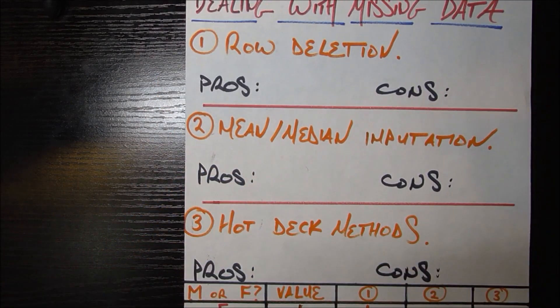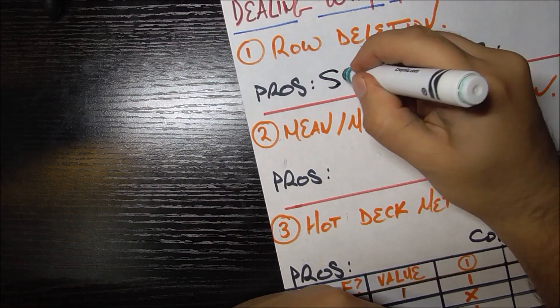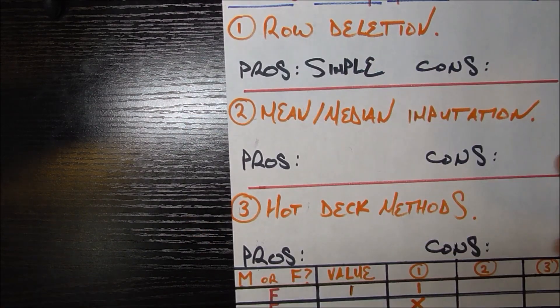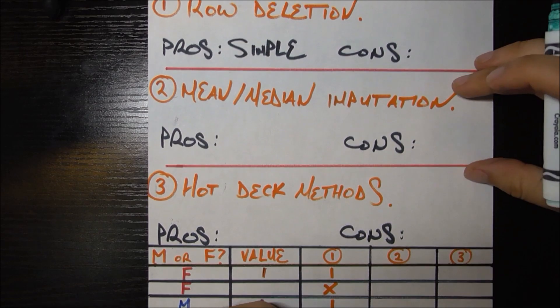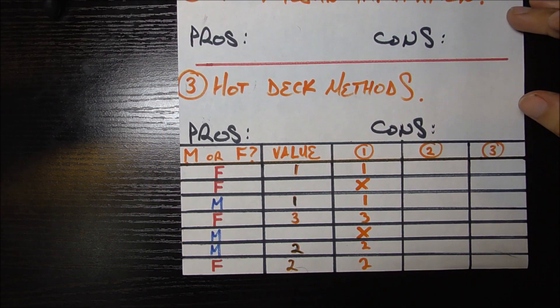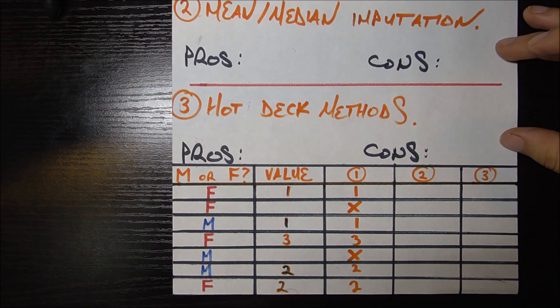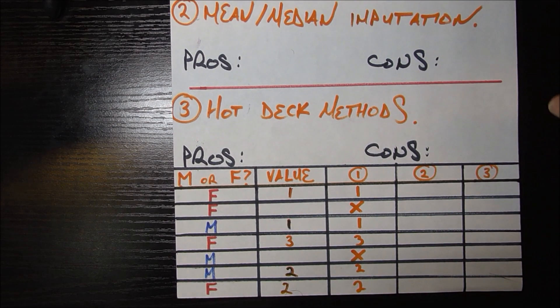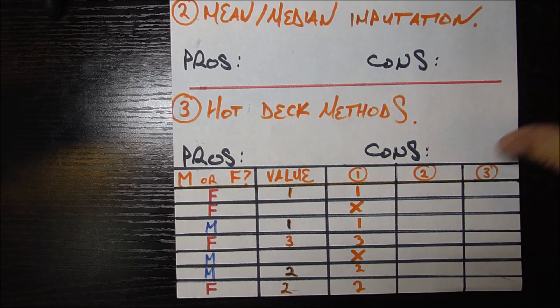So that's the pro of it. The pro is going to be that it is very simple. Pretty easy to do computationally and just to think about. Of course it seems too good to be true because it usually is. The con is that we're usually only safe in doing this when the data is missing completely at random. And if you're new to that term, please check out my video on missing data mechanisms where I explain what that means.